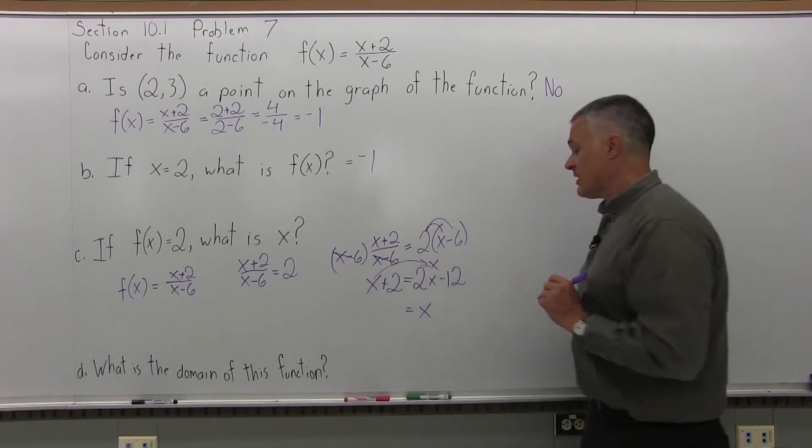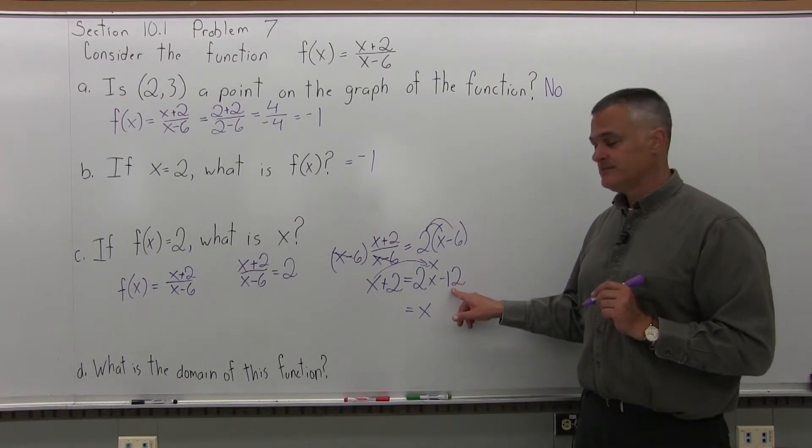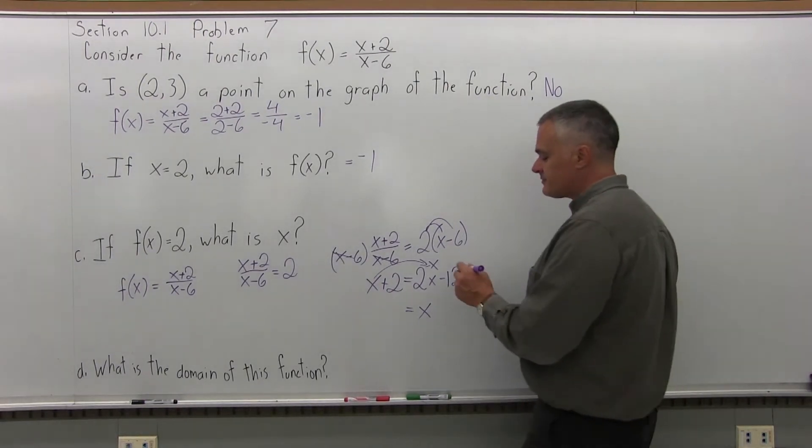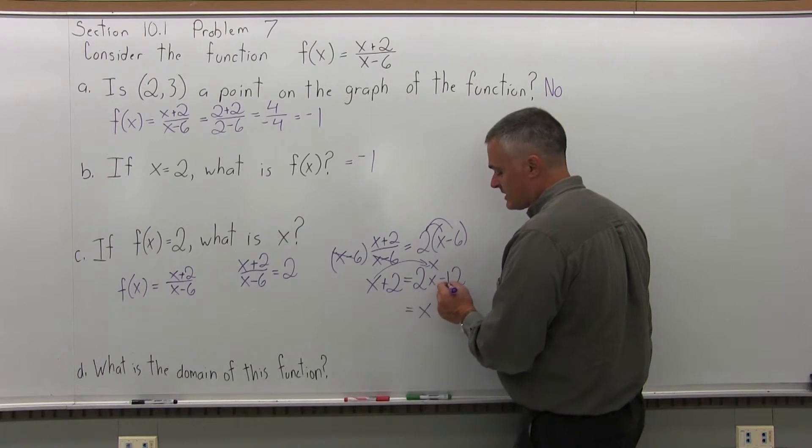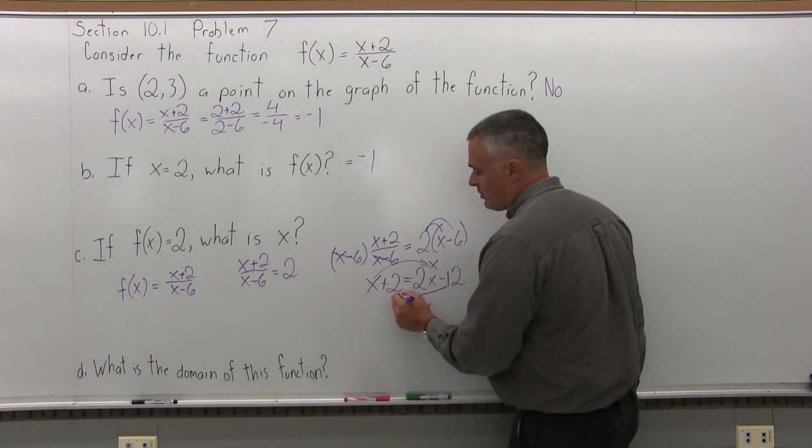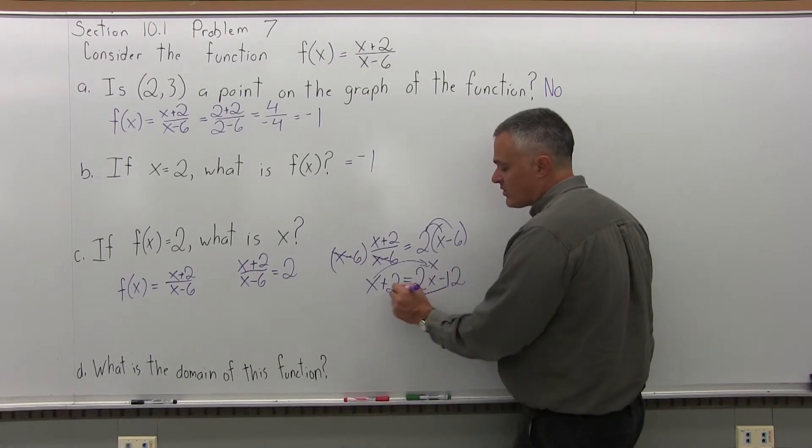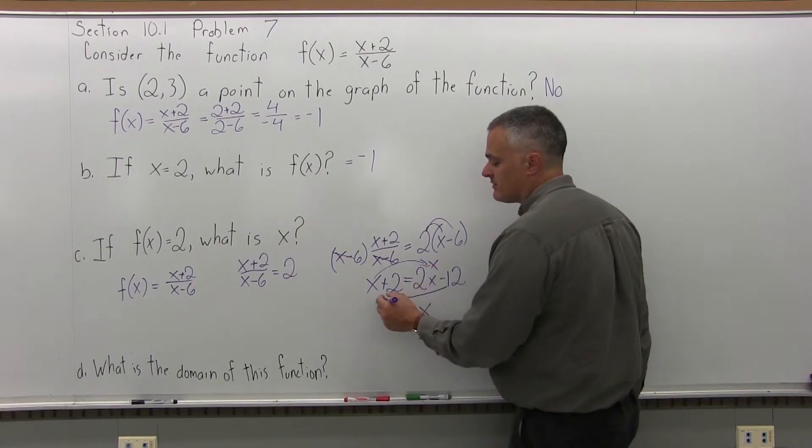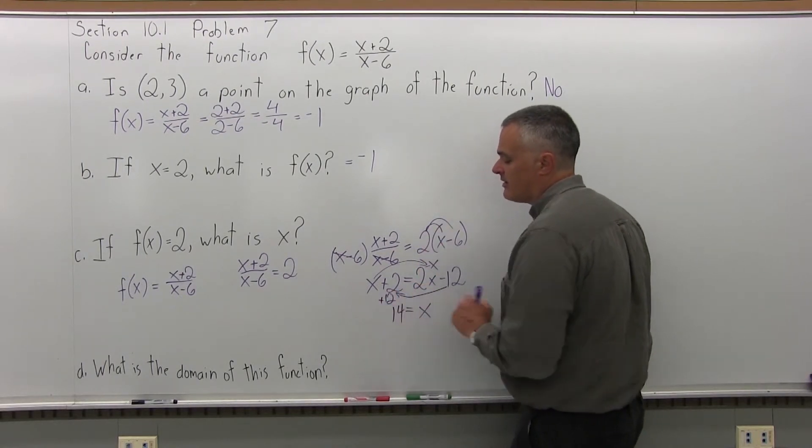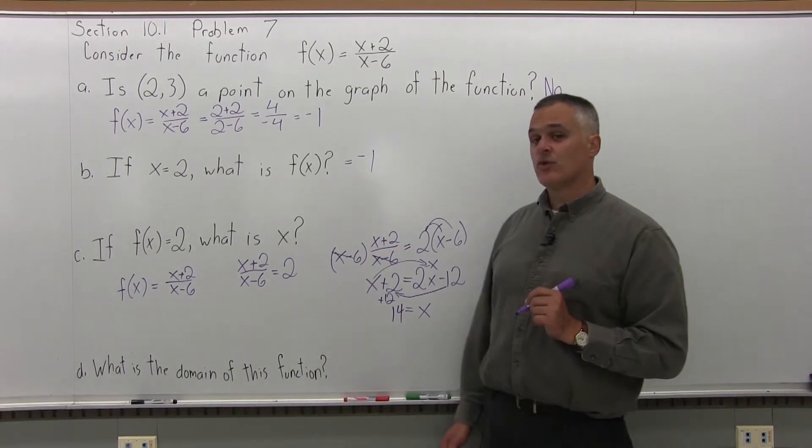And then on the right side of my equation, I have a negative 12. I'd like to cancel on the right. So I'm going to add 12 to both sides. Or you can think of it as I'm going to pull the 12 that's on the right side over to the left. It'll become a positive 12. I'm going to combine it with the positive 2 that's already there. And that'll tell me that x is 14.